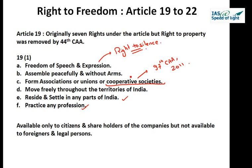Other restrictions include public order, decency, morality, and contempt of court. There must be a fine balance between the press and contempt of court. The press should not reach the level, under freedom of speech and expression, of contempting the court by criticizing the decisions or judgments of the court. It is important to distinguish between criticizing judgments and criticizing judges.